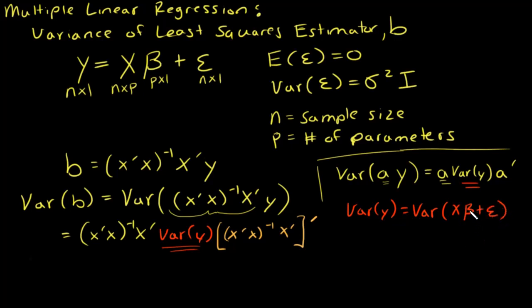The variance of y would be the variance of x times beta plus epsilon. Now x is non-random, beta is also non-random. Beta is our model parameters, they're not random. So when you take the variance of x times beta it just basically goes away to zero. So the variance of this basically equals the variance of epsilon which we've assumed is sigma squared times I.